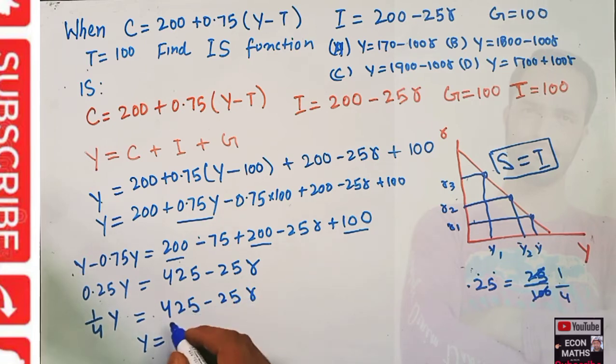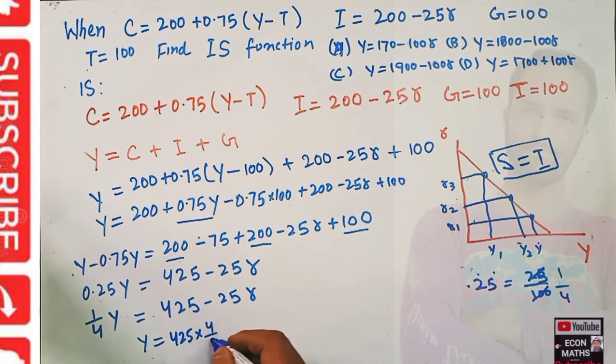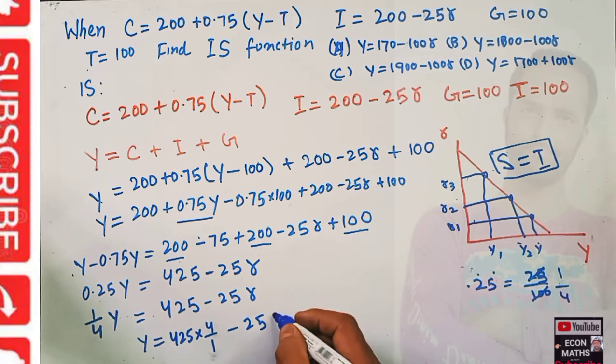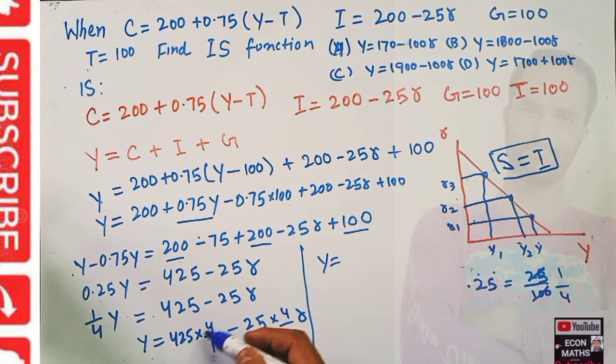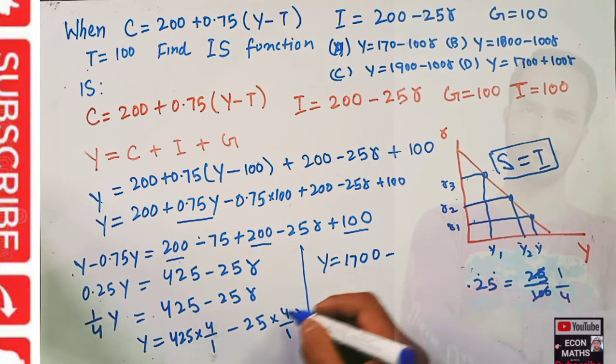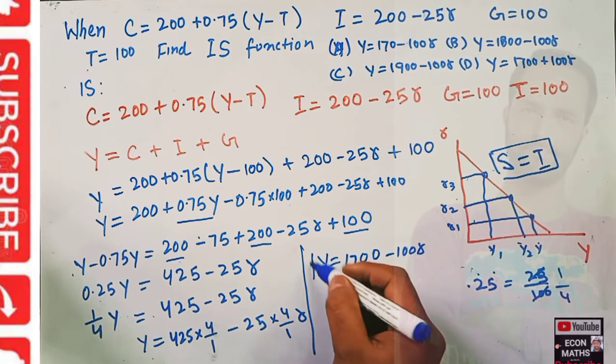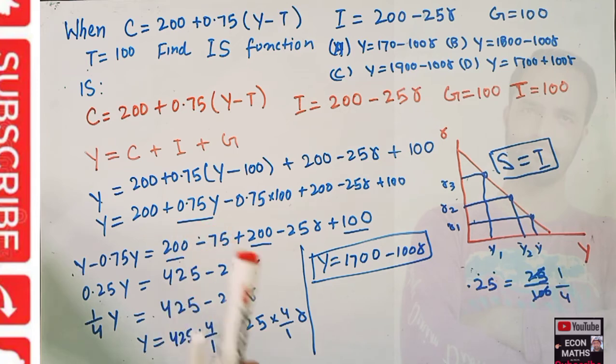Y = 4 times 425 minus 25 times 4 times r. 4 times 425 is 1700, and 4 times 25 is 100, so Y = 1700 - 100r. This is our IS function.